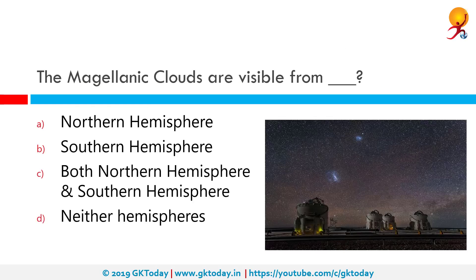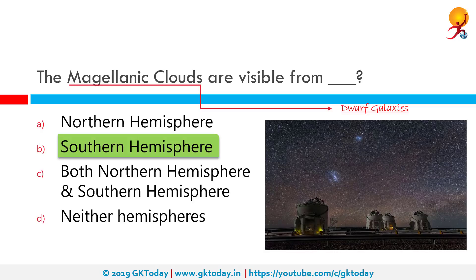The Magellanic clouds are visible from the southern hemisphere. They are two irregular dwarf galaxies, members of the local group, and are orbiting the Milky Way galaxy.